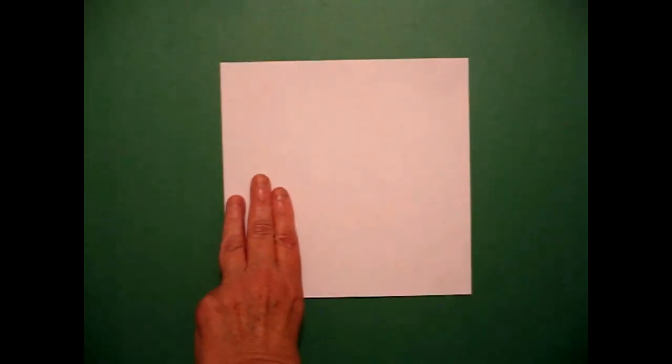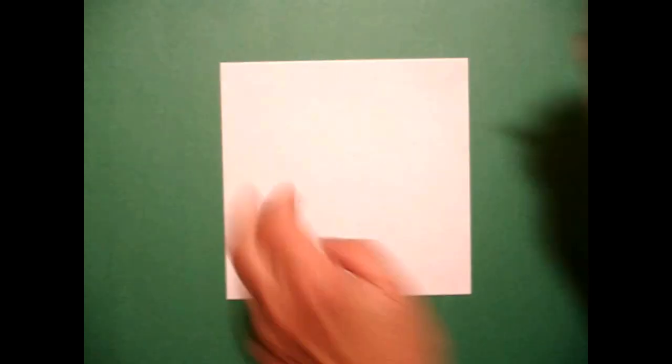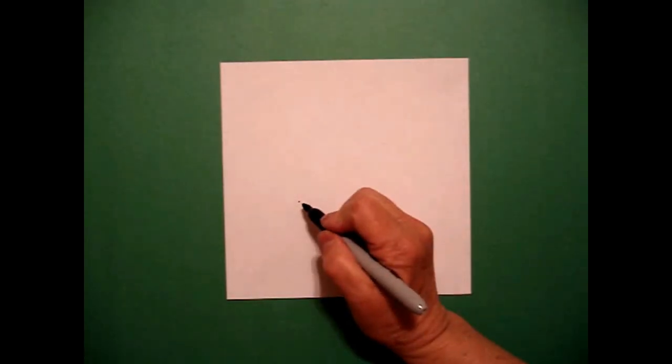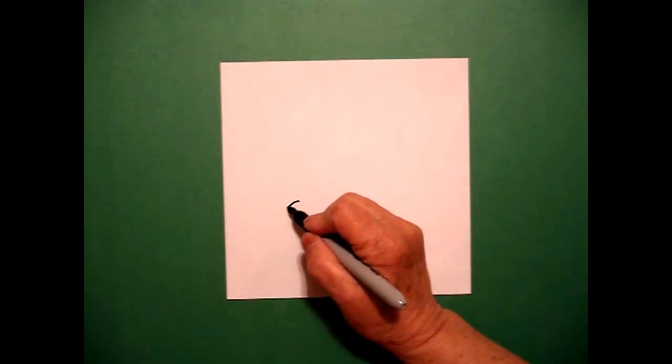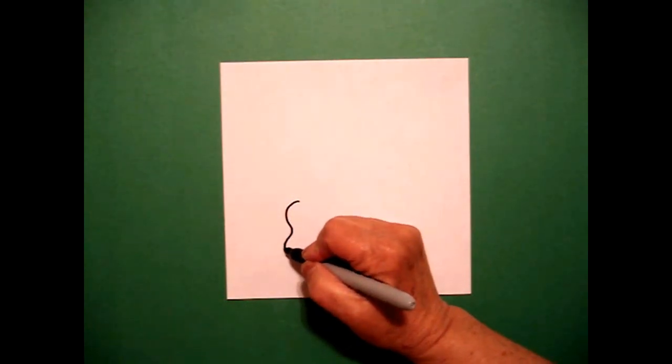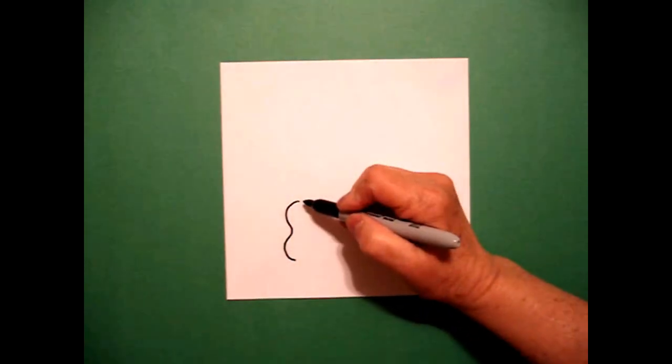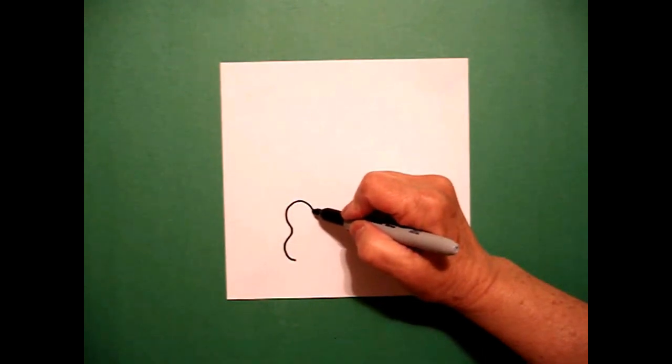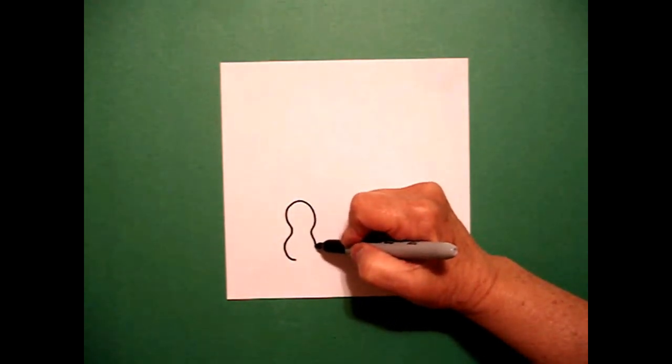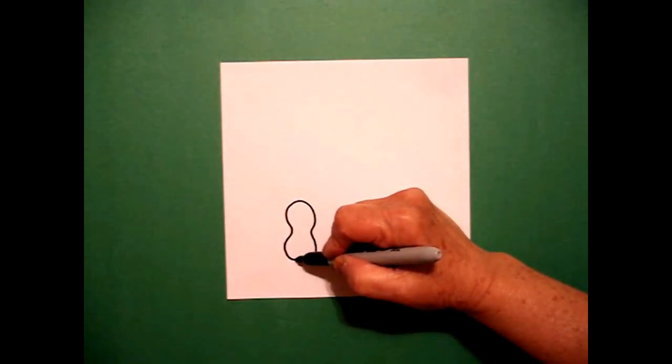I'm going to take three fingers on the left and I'm going to put a dot. And from that dot, I'm going to draw a curve line out, in, out, come back to the dot, curve line out, in, out, connect.